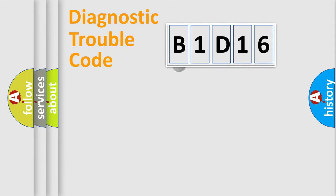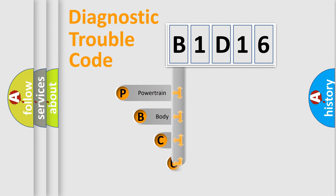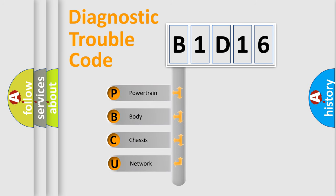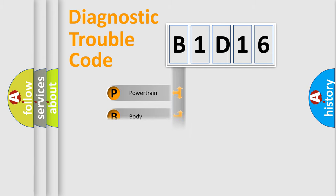First, let's look at the history of diagnostic fault code composition according to the OBD-2 protocol, which is unified for all automakers since 2000. We divide the electric system of an automobile into four basic units: powertrain, body, chassis, and network.